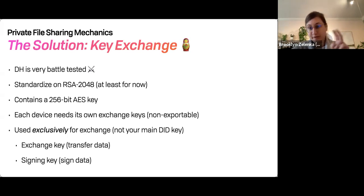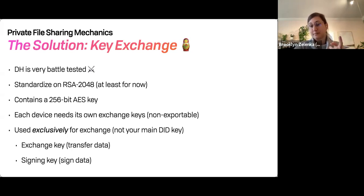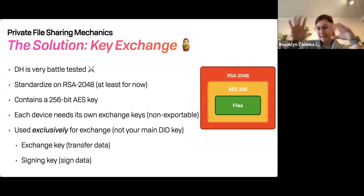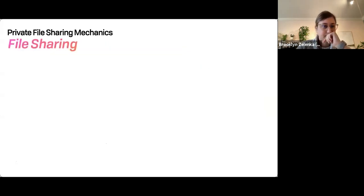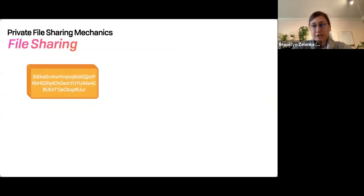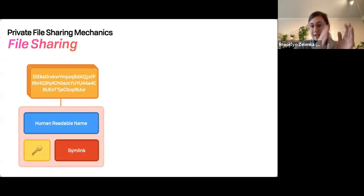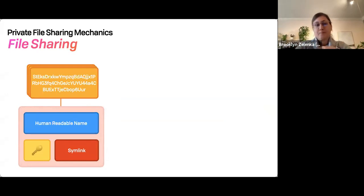The actual files that you want to send are encrypted in AES, and then that AES key is encrypted with RSA. So for the file sharing itself: for each of your recipient exchange keys, you create a node in the private file system that contains that structure — RSA, AES, and then the pointer to the thing you're going to be looking for. It contains a key and a symlink.